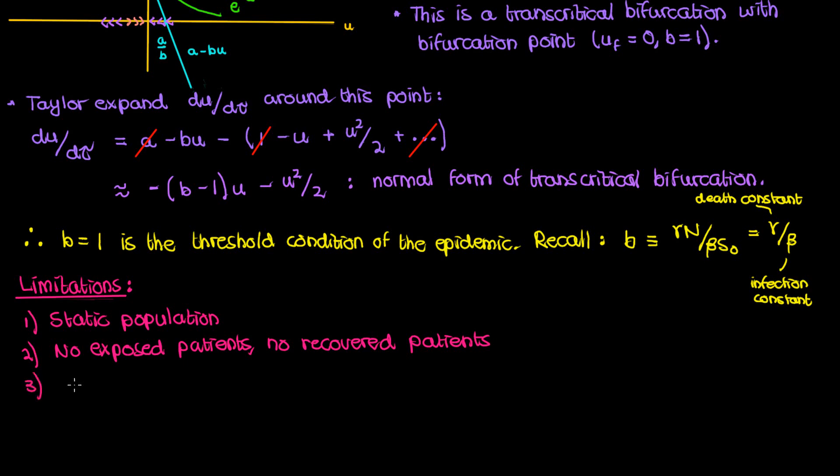We also assume that the disease homogeneously affects the population. In other words with respect to killing the disease has no preference for the patient's age and other underlying medical conditions.